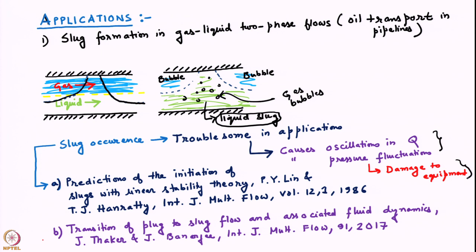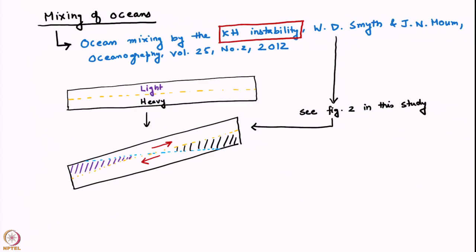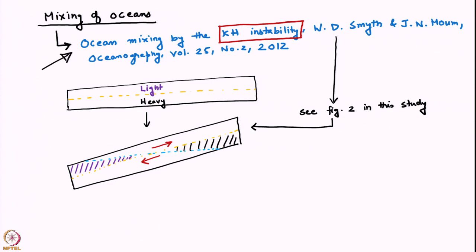I have outlined two papers for those interested in understanding slug formation more. The second area of application is mixing in the ocean, where Kelvin-Helmholtz instability is particularly relevant. If you are interested, you can go and read a paper which is a nice introduction to how Kelvin-Helmholtz instability leads to mixing in the ocean.